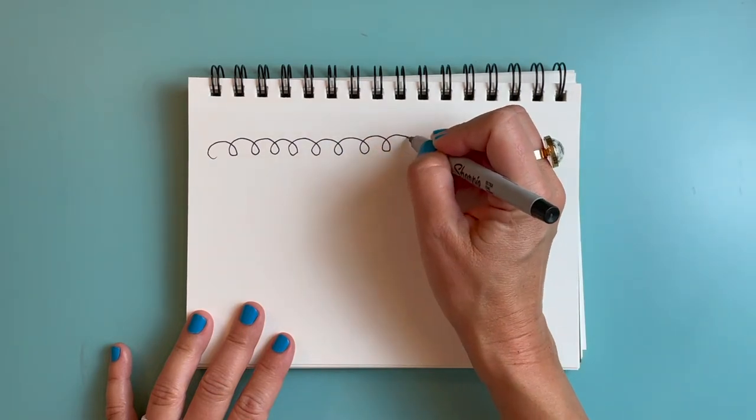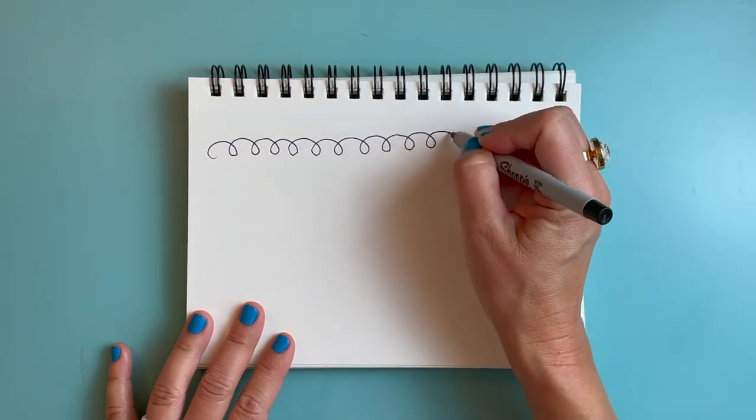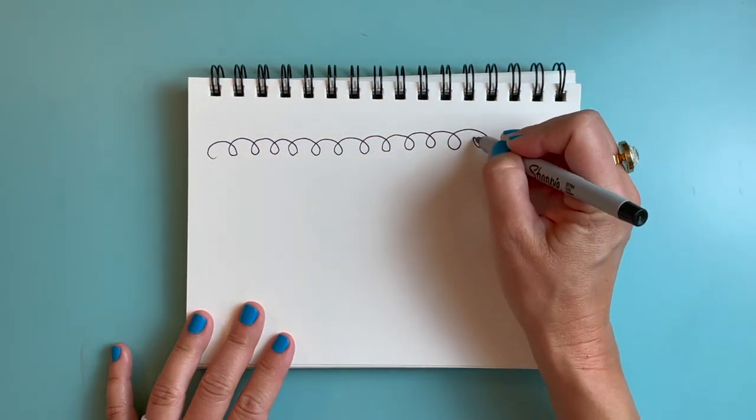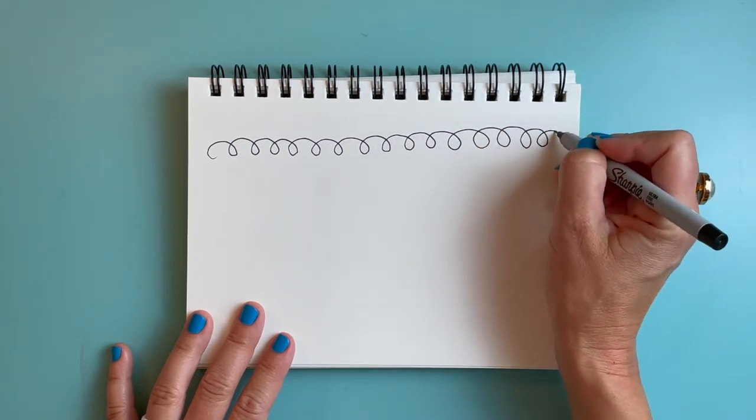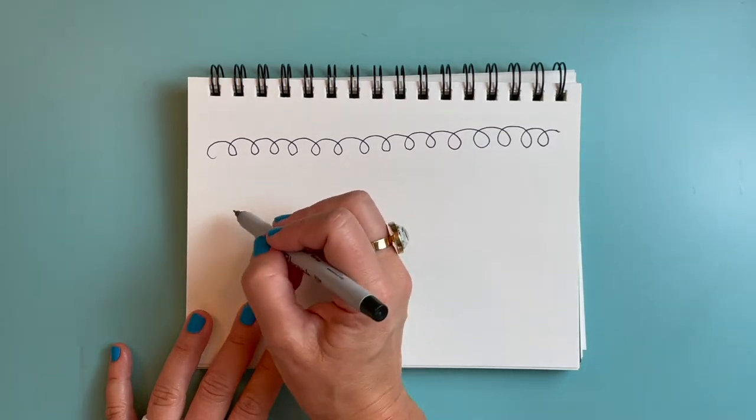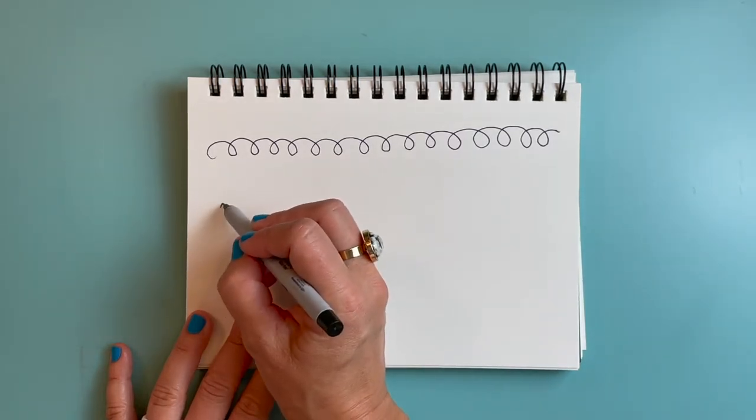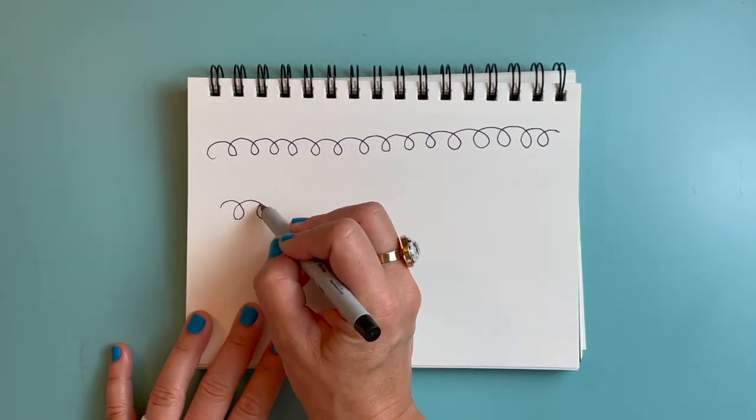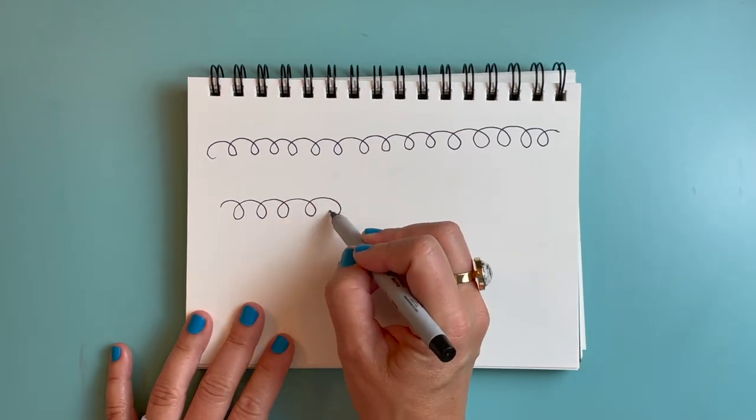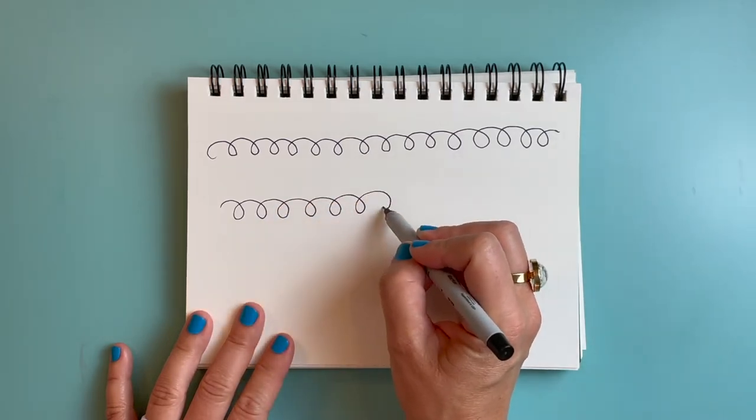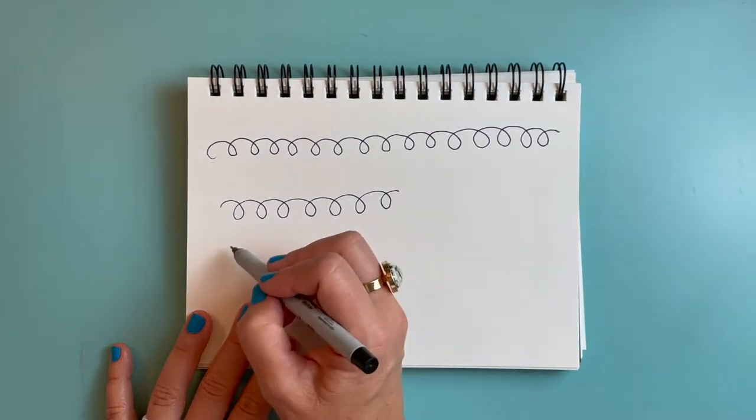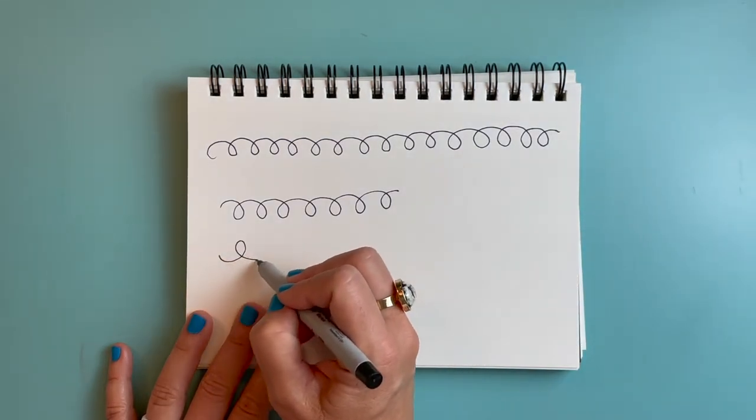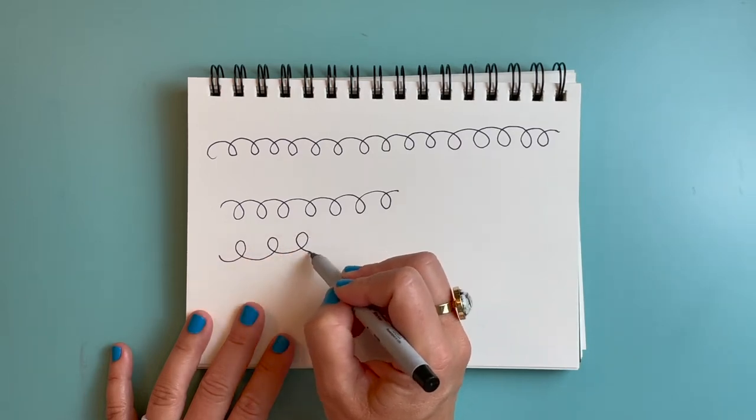And when I'm drawing curly lines sometimes it helps me to think loop-de-loop-de-loop-de-loop. So I'm just going to doodle some curly lines here. You can make your curly lines curl downward like this, loop-de-loop-de-loop-de-loop. Or your curly lines might curl upwards like this, loop-de-loop-de-loop-de-loop-de-loop.